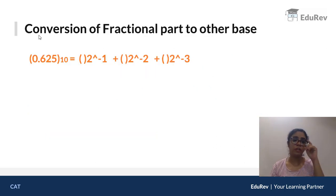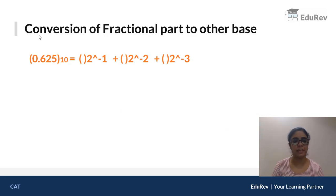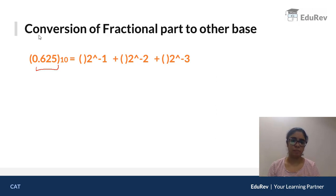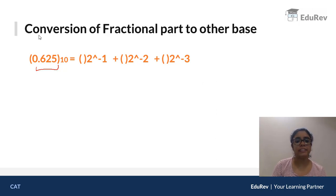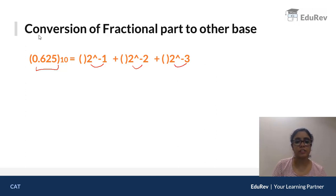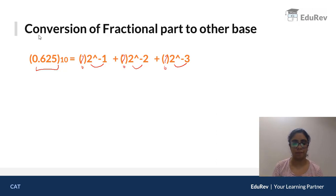What if we want to convert the fractional part to another base? Our decimal number is a fractional value after the decimal point, and we need to convert it to binary. After the decimal point, the place values are 2⁻¹, 2⁻², and 2⁻³. The question is: what binary digits go in each position? We know 2⁻¹ = 0.5, 2⁻² = 0.25, and 2⁻³ = 0.125.